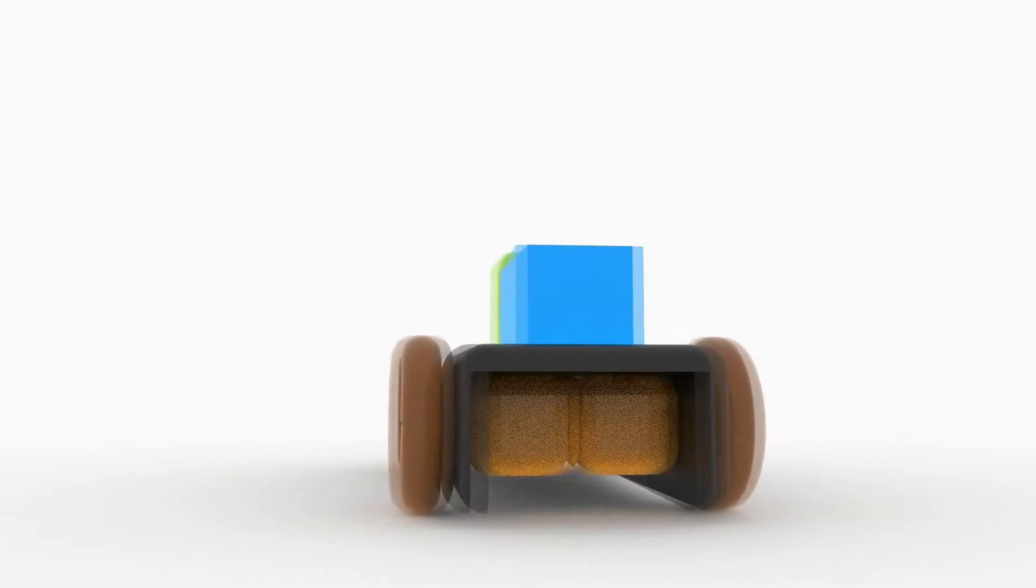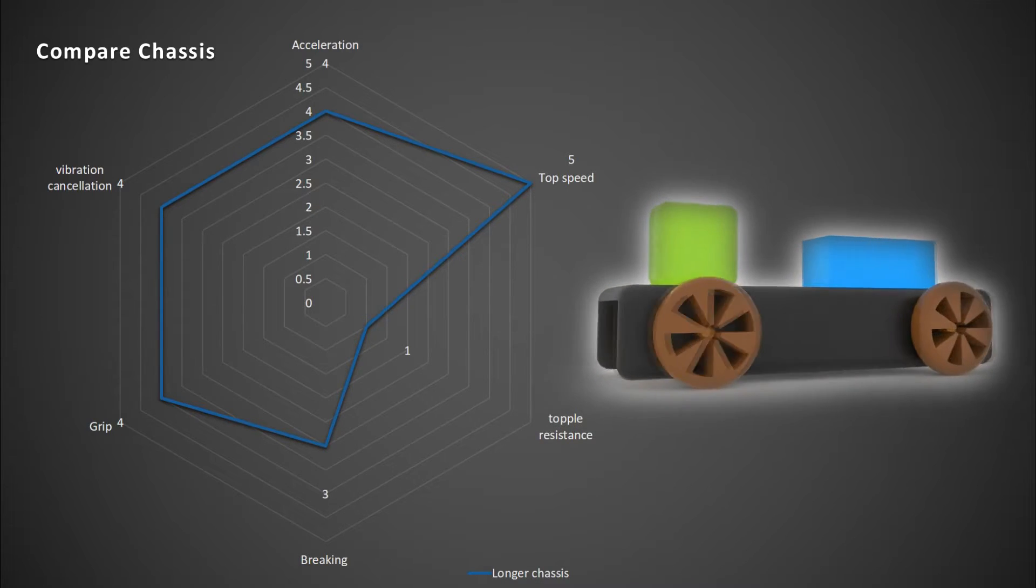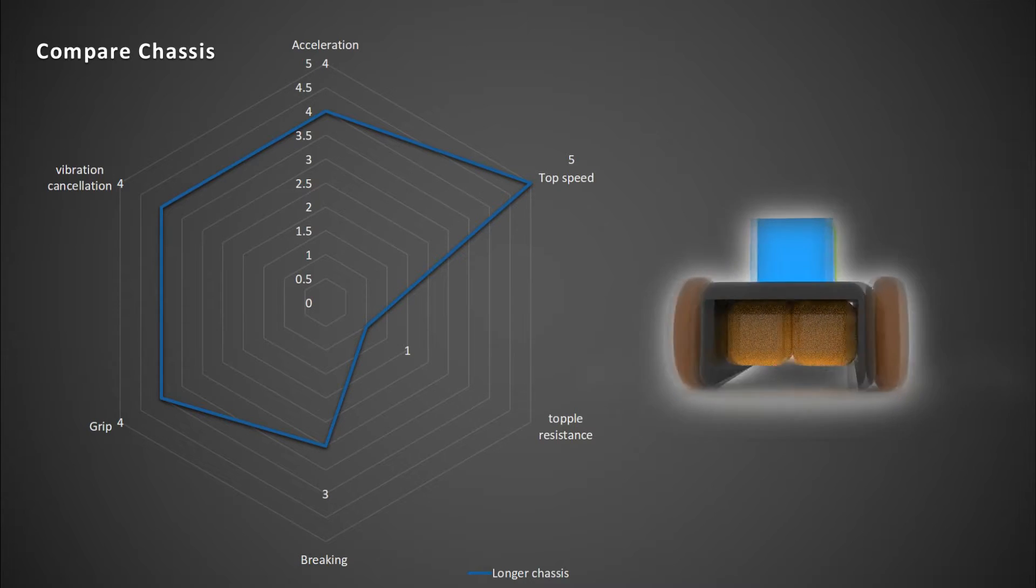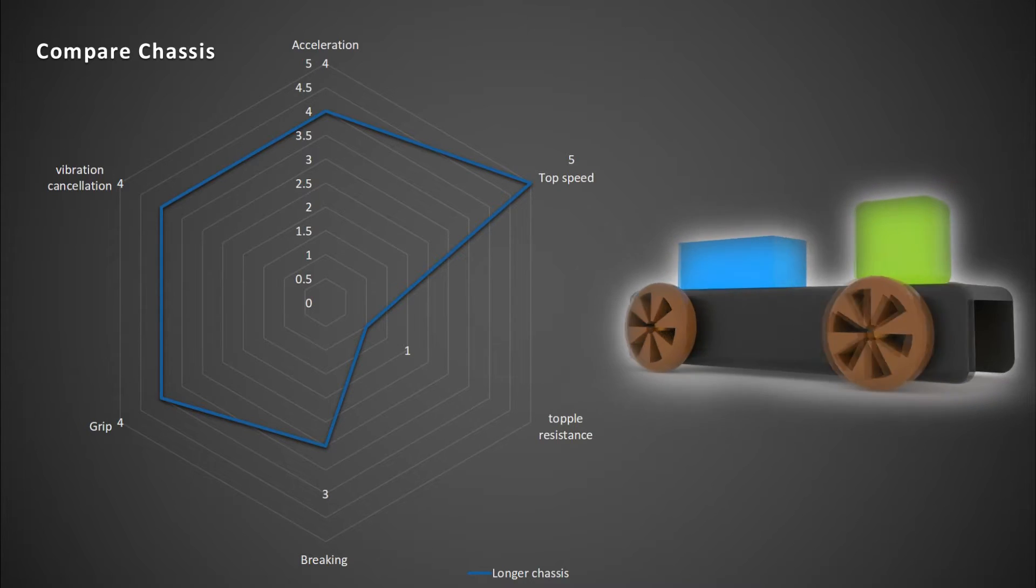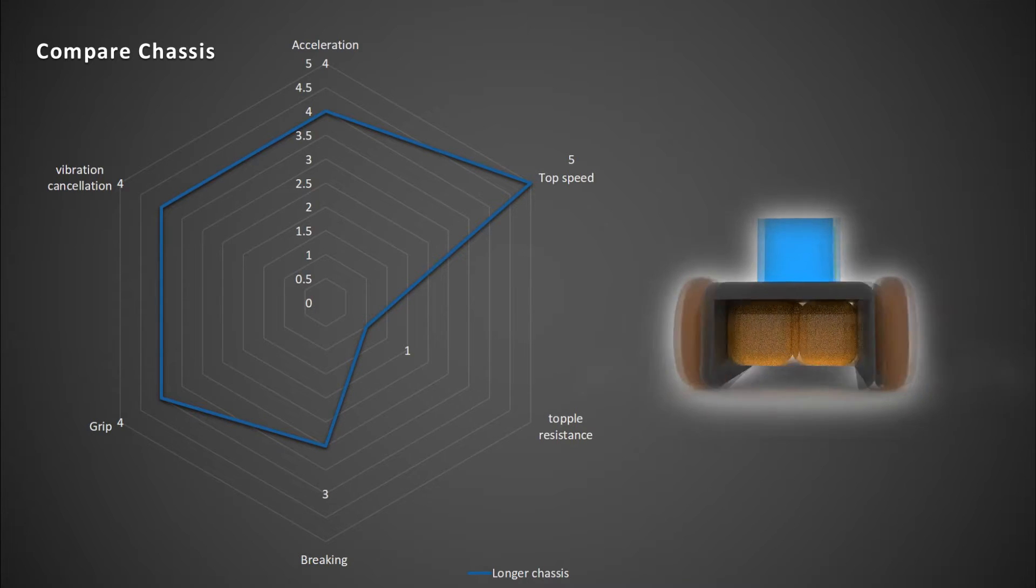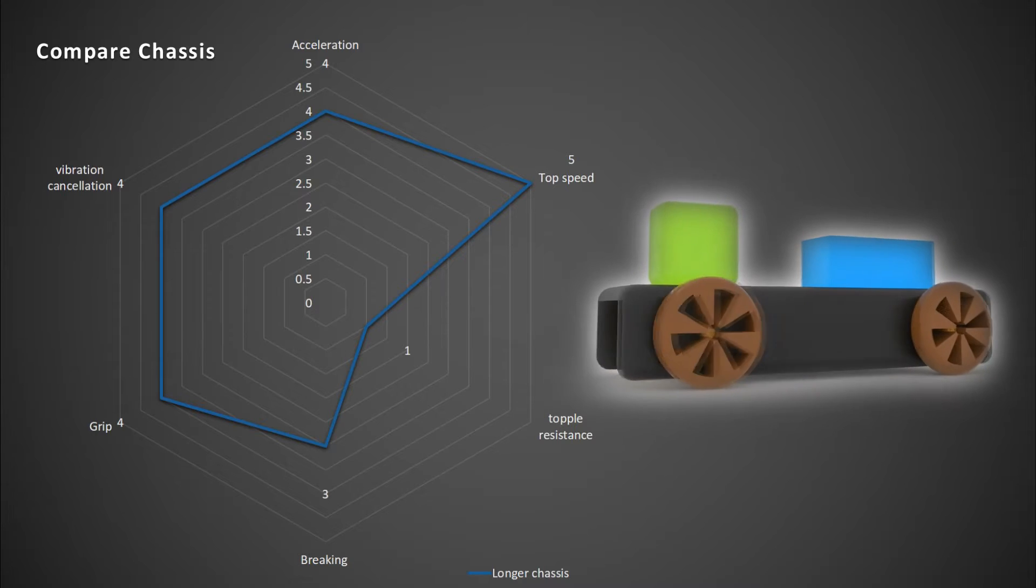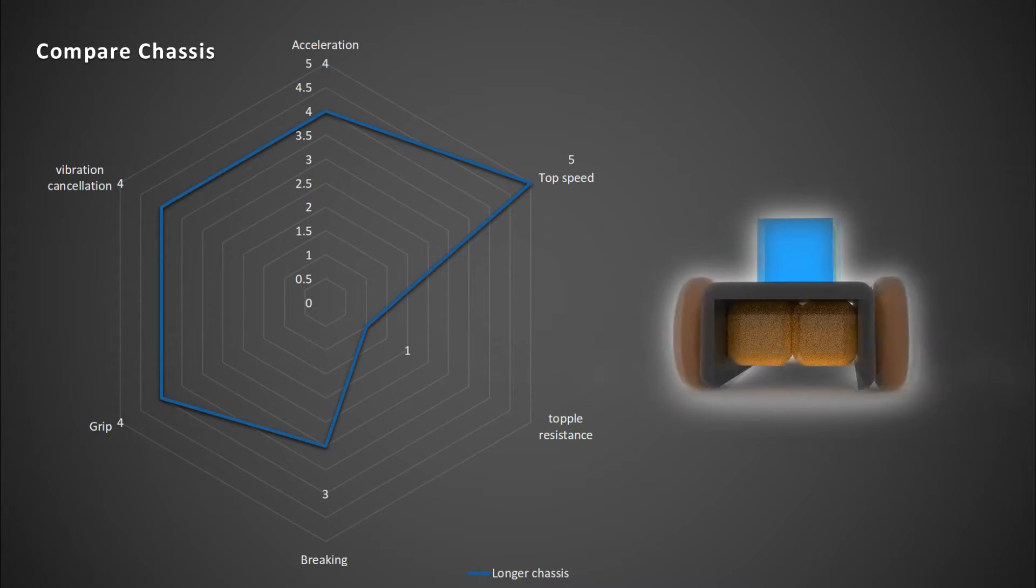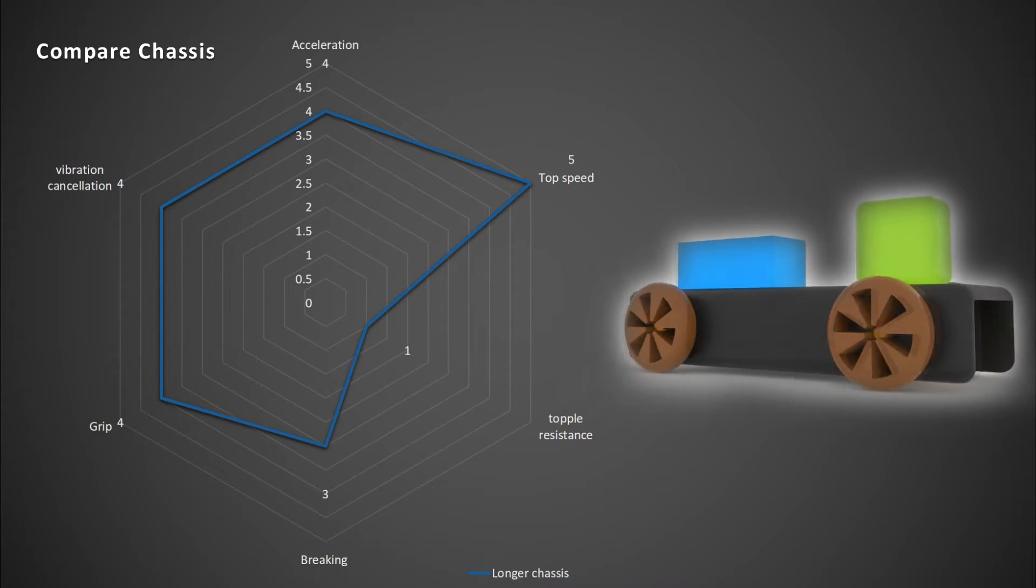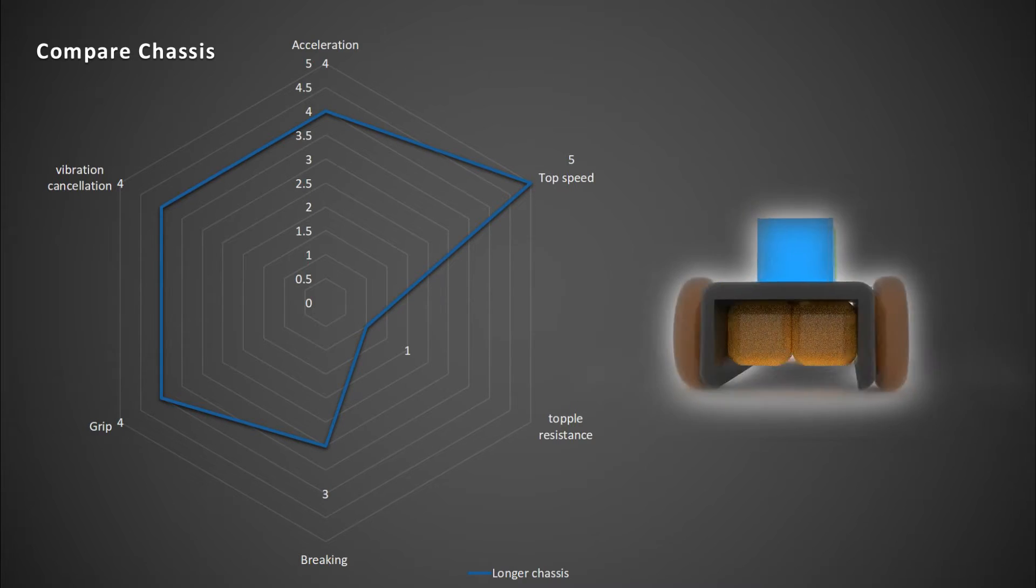Now the last type we'll talk about is long chassis. Long chassis is very advisable. Long chassis have very high top speed. But due to that, acceleration and braking is affected. Since the chassis is long, the grip is not much, and the vibration cancellation is also very less. But the major downfall is the toppling resistance. Due to larger chassis, a small hit from the side might topple your robot.